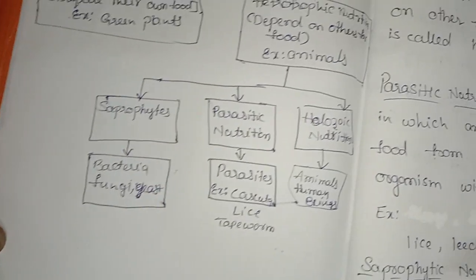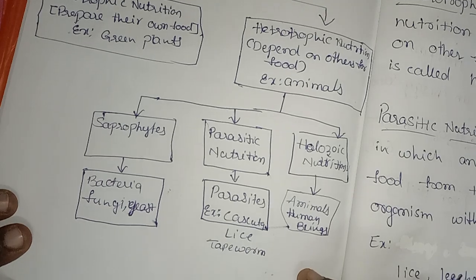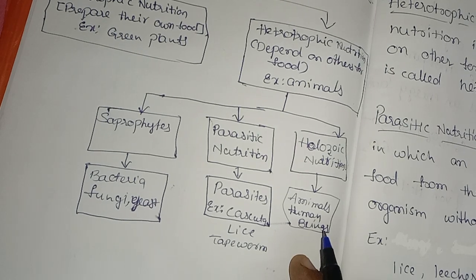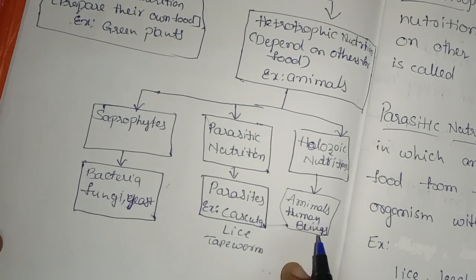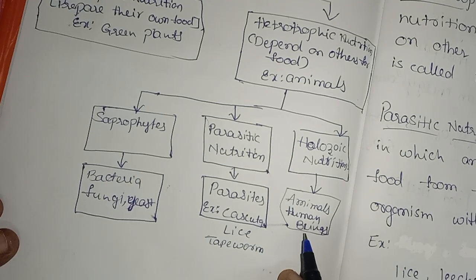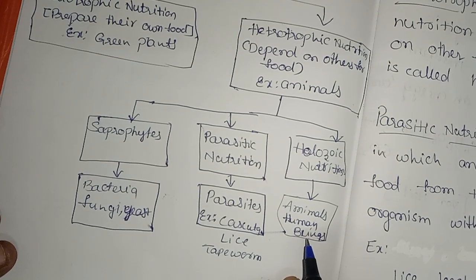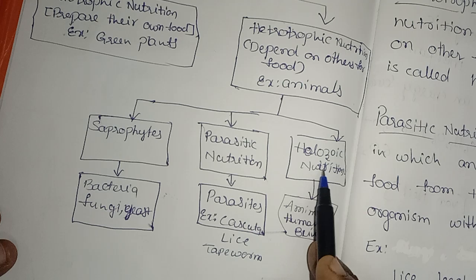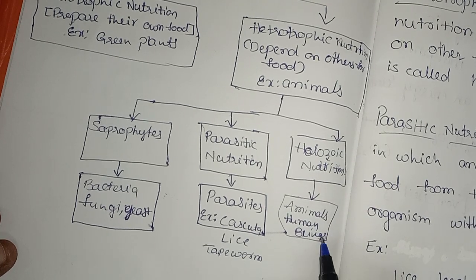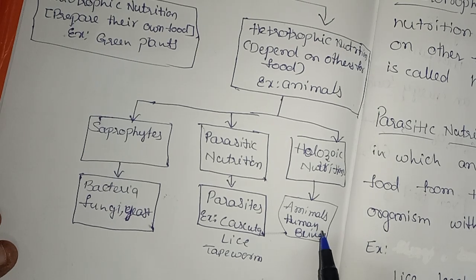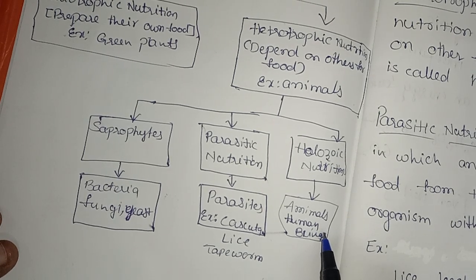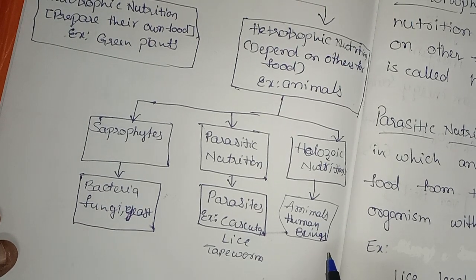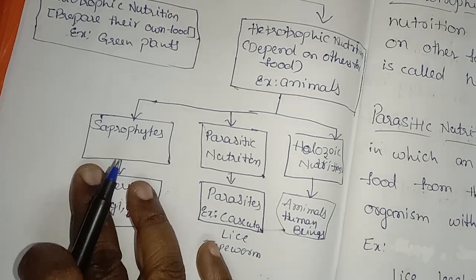Holozoic nutrition is the type in which animals take food in the form of solid, digest that food, absorb the nutrients, and then expel the waste. All animals and human beings come under this group, since they take food in solid form, digest it, absorb nutrients, and dispose of waste at the end.